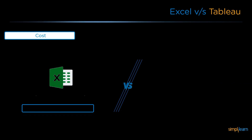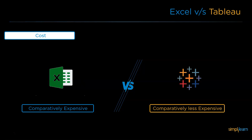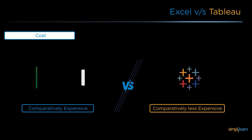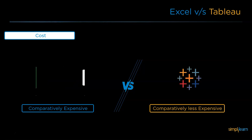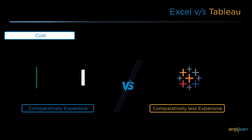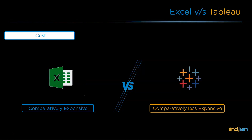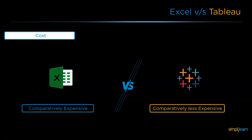The next difference between the two is cost. Microsoft Excel is not available as a single product; if you want to use it, you need to buy all Microsoft products such as Microsoft Access, Microsoft PowerPoint, etc., as they all come as a single package. When it comes to Tableau, it is available in different versions: the open source version, Tableau Public, and the desktop version, Tableau Desktop. There are five to six varieties, each with a different cost, and Tableau Public is completely open source and free. Compared to Tableau, Excel happens to be a little more expensive.